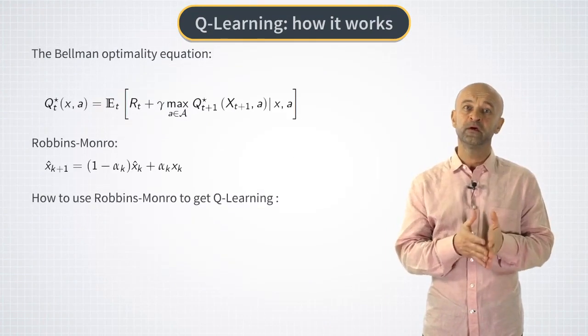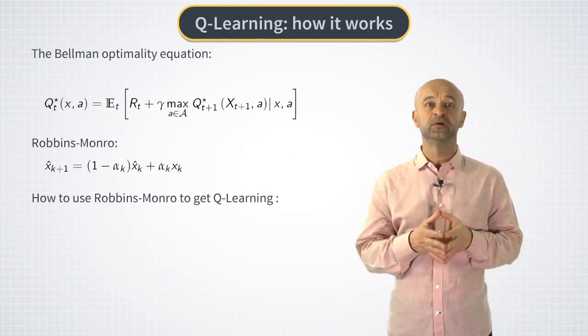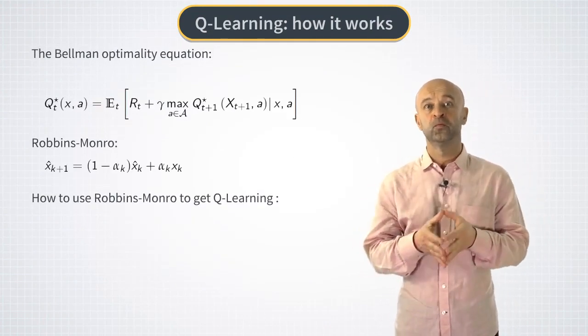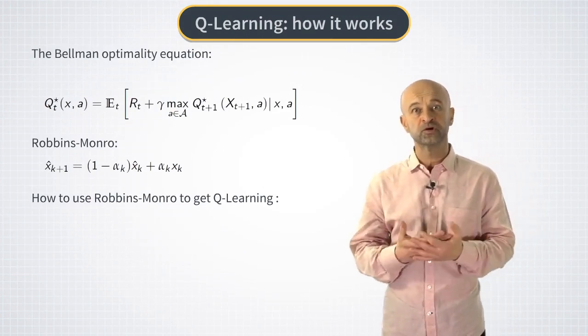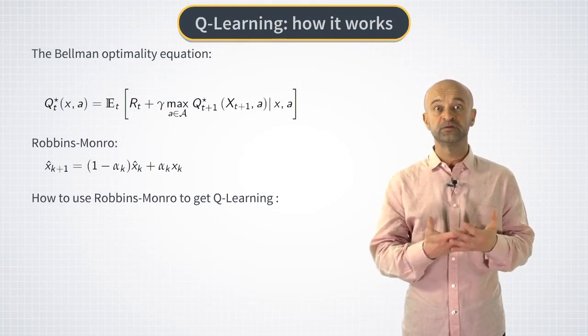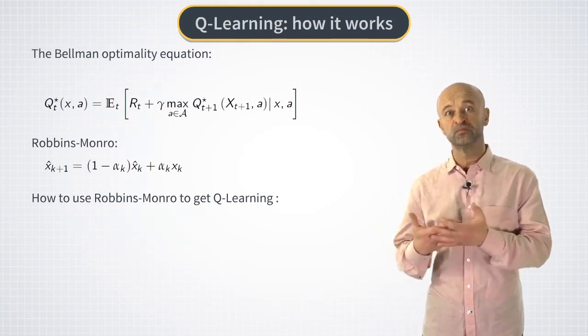Therefore, we can take an individual sum of the current observed reward Rt and the max of the next step optimal Q function as the current observation xt in the Robbins-Monroe formula.